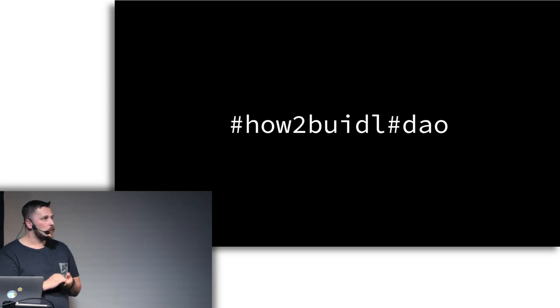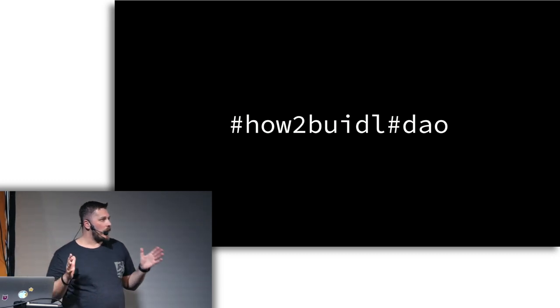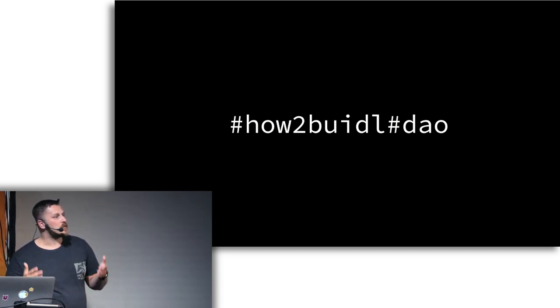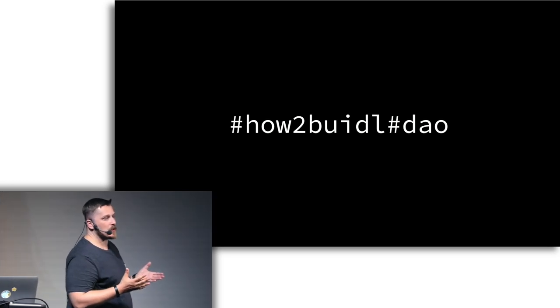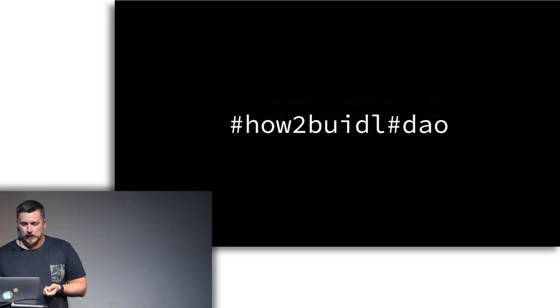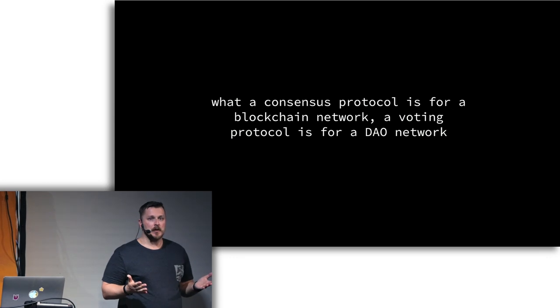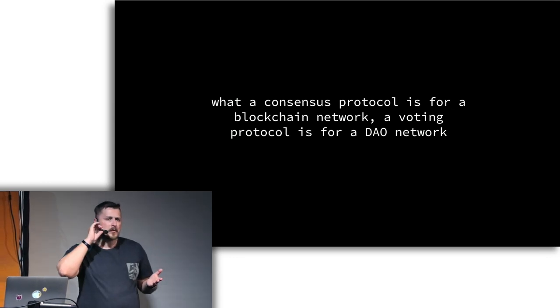The basic principle of the DAO is that no one really owns the project - it's the community that owns the project. There is no centralized project owner. In order to reach that, we need a consensus protocol, and this consensus protocol among humans is normally referred to as a voting protocol. Implementing voting protocols on a blockchain network is actually not that trivial.